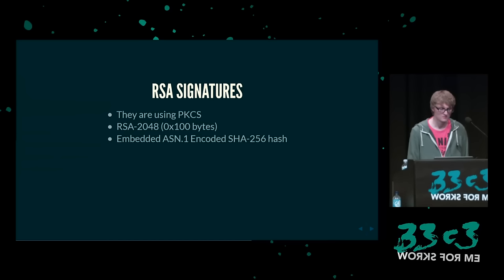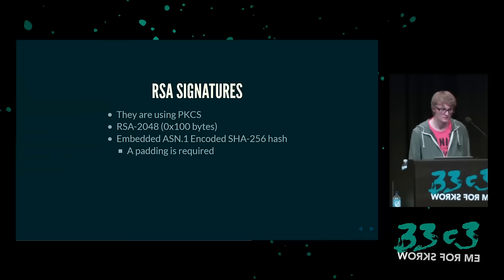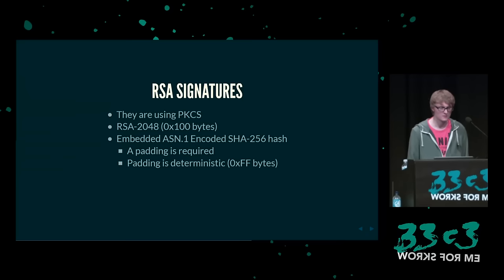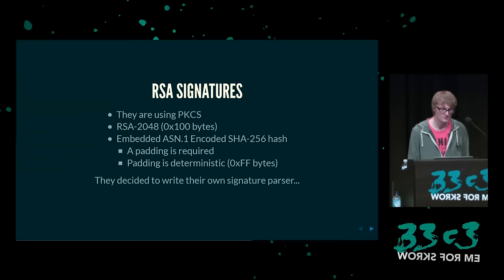Weil der SHA-2-Hash nur so groß ist, ist da etwas Platz übrig, den jemand füllen muss. PKCS nennt das Padding, das soll deterministisch sein. Wenn man versucht, Signaturen zu fälschen, ist das sehr schwierig, weil das Padding dann sehr lang wird. Wenn du Signaturen verschiedener Firmware-Images vergleichst, bemerkst du, dass nur die Hashes sich ändern — der Rest der Daten ist immer derselbe. Aber aus irgendeinem Grund haben sie beschlossen, einen eigenen Signatur-Parser dazu zu schreiben — das ist Nintendos ASN1-Parser, mal wieder.